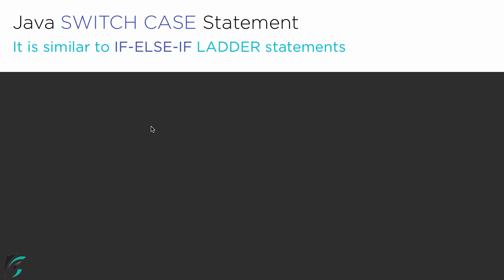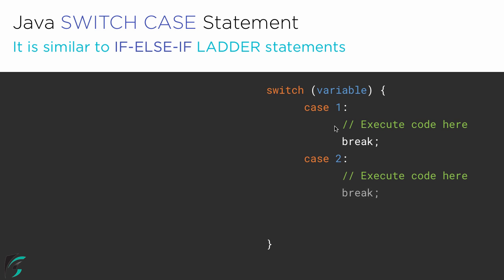The switch case statement in Java is exactly similar to the if-else ladder statements that we saw in the previous videos, so please check that video out if you haven't yet. Now, what is the syntax to define the switch case statement? Here is the syntax: switch, and as a parameter simply pass the variable you want to check. Within the switch statement, we write the various case statements, such as these cases and this default case. So what do we mean by the case, break, and default keywords?